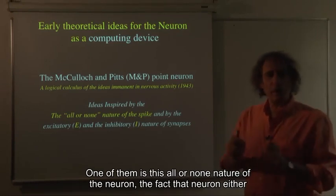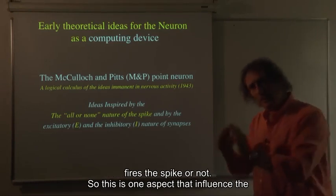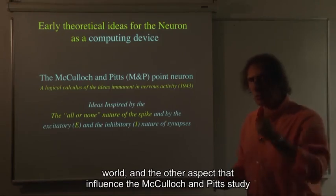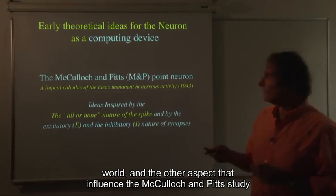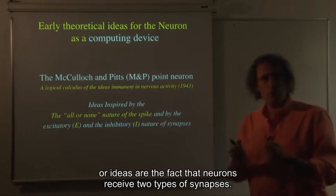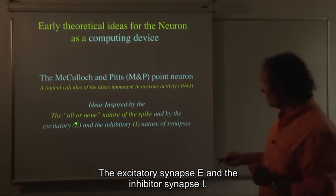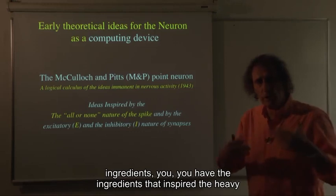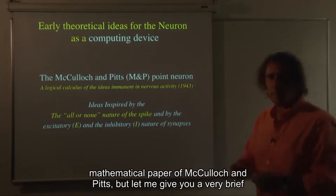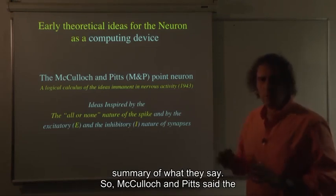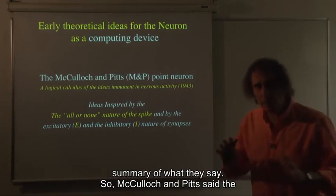One of them is this all or none nature of a neuron, the fact that the neuron either fires a spike or not. So this is one aspect that influenced the work. And the other aspect that influenced the McCulloch and Pitts study or ideas are the fact that neurons receive two types of synapses, the excitatory synapse E and the inhibitory synapse I. You already know this, so you basically have all the ingredients that inspired the heavy mathematical paper of McCulloch and Pitts.